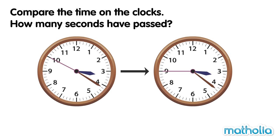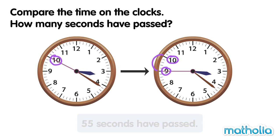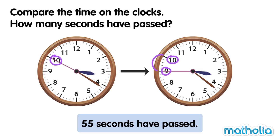How many seconds have passed? The second hand has moved from 10 all the way around to 9. We know that it takes 60 seconds to move all the way around the clock. There are 5 seconds between 9 and 10. So 5 seconds less than 60 seconds have passed. 60 minus 5 equals 55. So 55 seconds have passed.